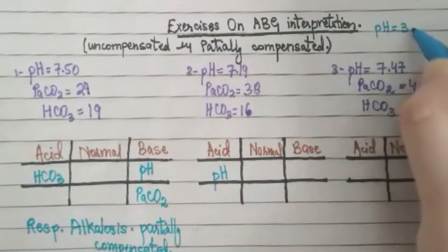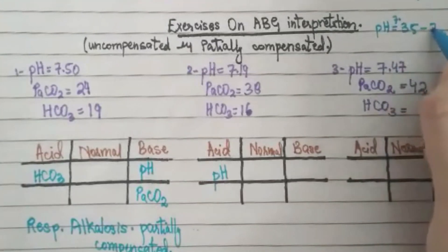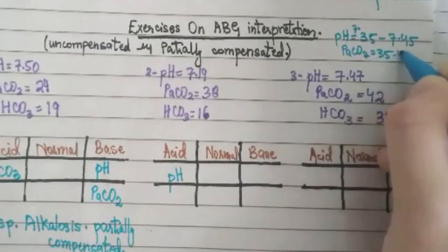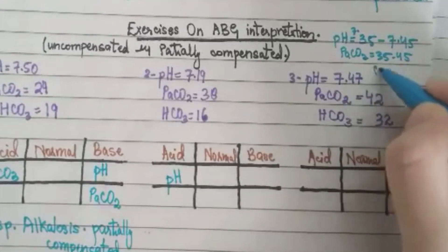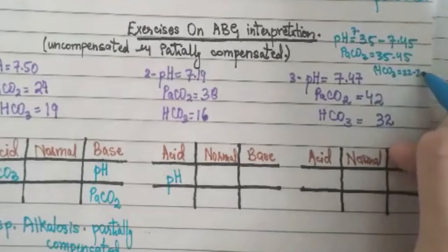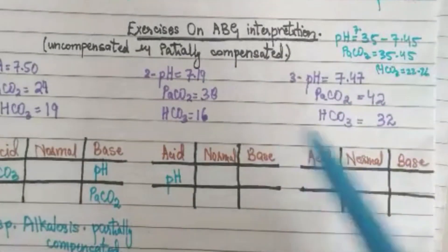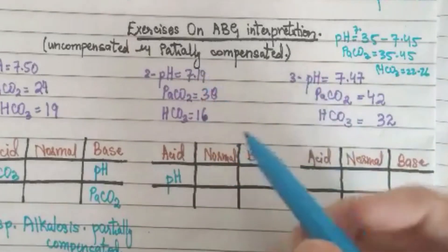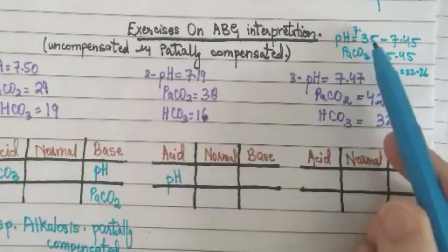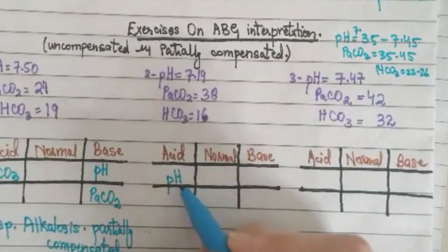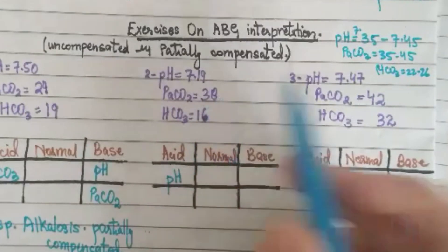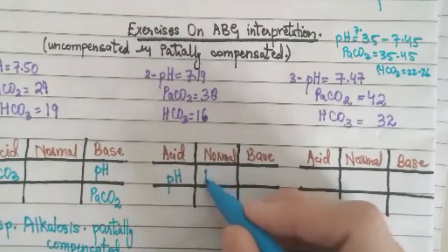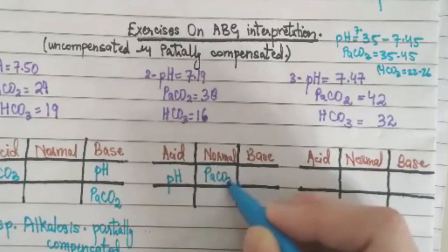The normal pH range is 7.35 to 7.45. CO2 normal range is 35 to 45, and HCO3 normal range is 22 to 26. So pH 7.19 is less than 7.35 — acidic side. The partial pressure of carbon dioxide is 38, which is within the normal range, so we place it in the normal range.